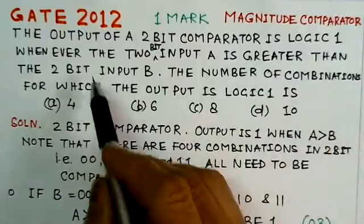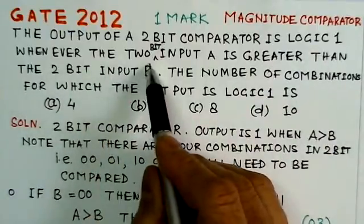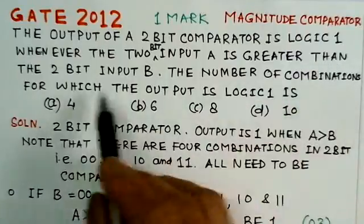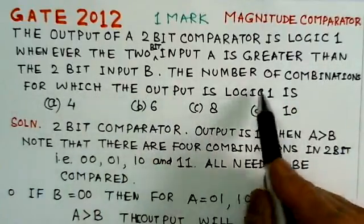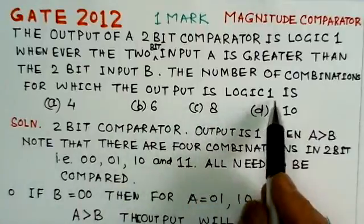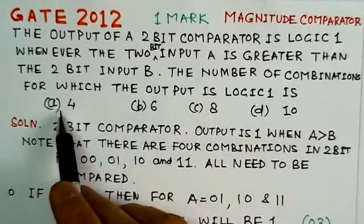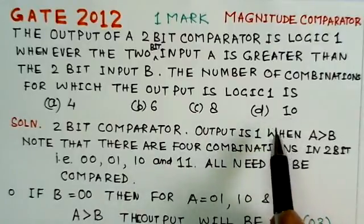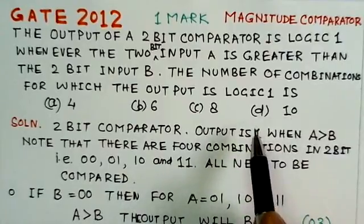...is logic 1 whenever the 2-bit input A is greater than the 2-bit input B. The number of combinations for which the output is logic 1 is: 4, 6, 8, and 10. So what this problem says, there is a 2-bit comparator circuit...